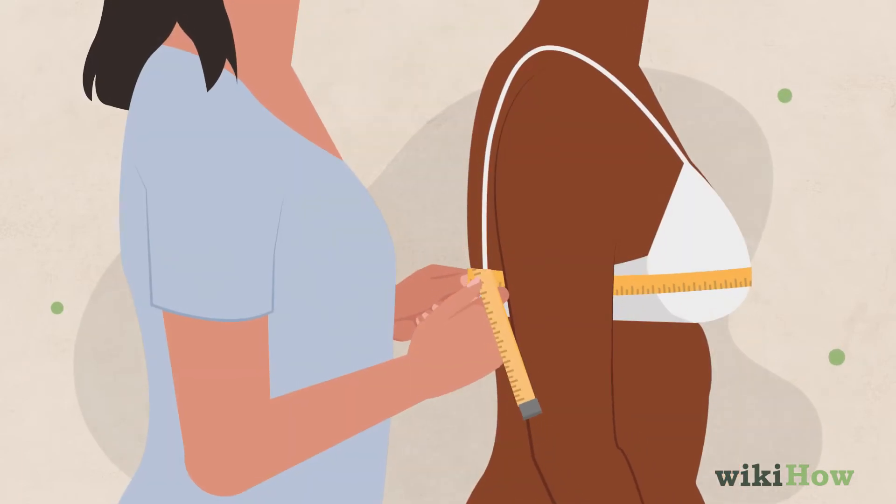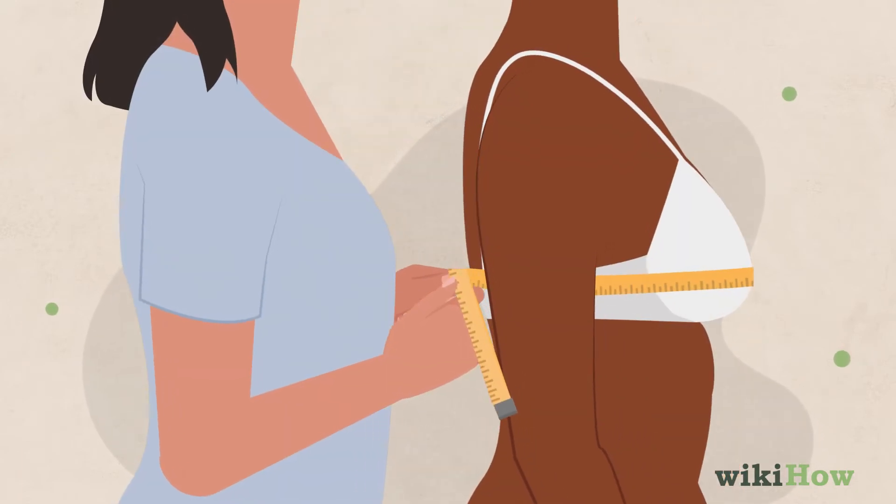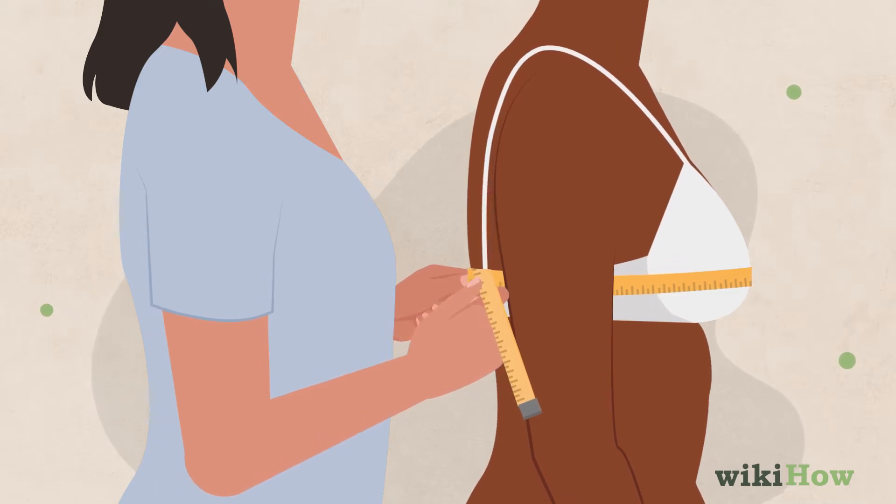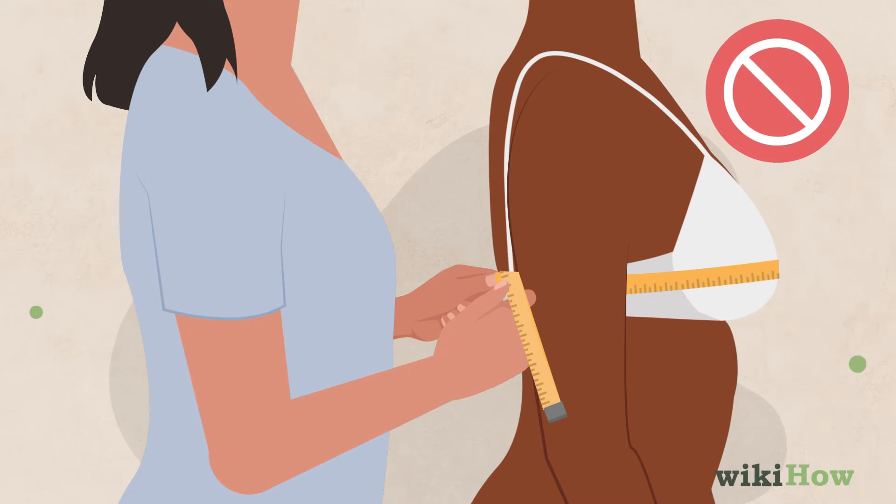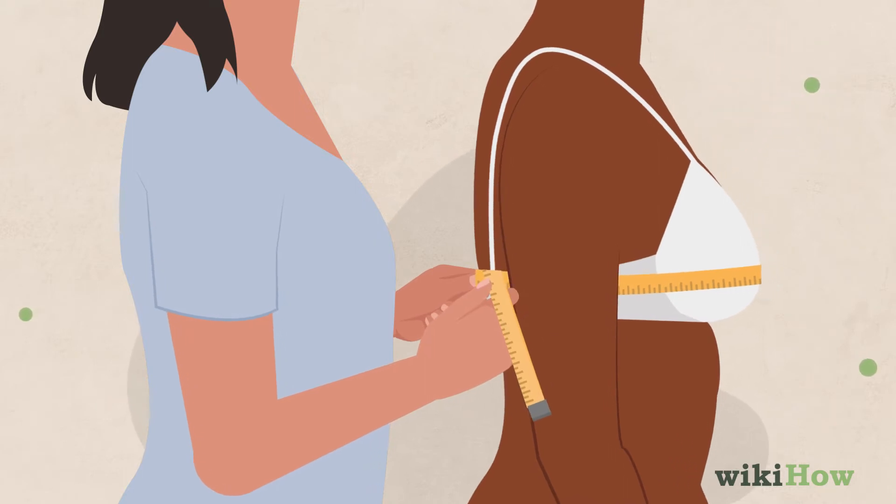Pull the tape tight enough so that it doesn't sag, but don't make it so tight that it digs into your skin, otherwise your measurement will be too small. Avoid flexing your chest muscles or pushing out your breasts. Just relax and stand normally.